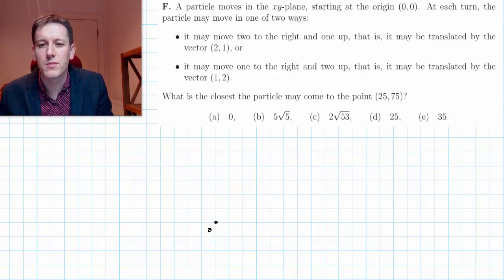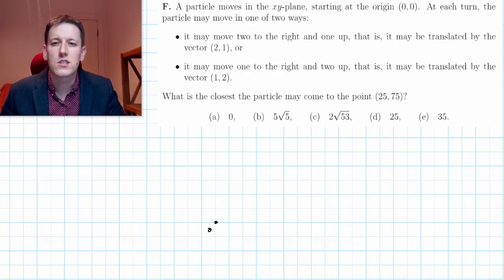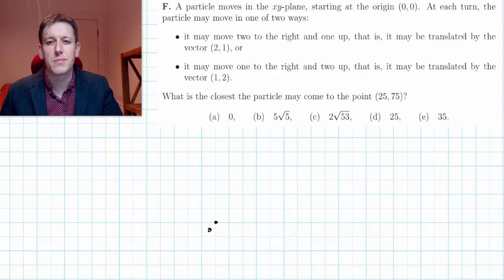Let me just label the origin somewhere down here. Each turn it may move in one of two ways, either two to the right and one up or one to the right and two up, so translated by the vector stated.